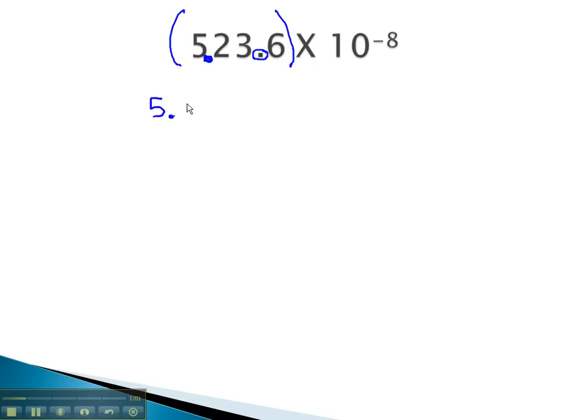Because 523 was a big number, we'll use a positive exponent, positive 2. We still have times 10 to the negative eighth at the end of the expression. It hasn't changed, so it's still there.